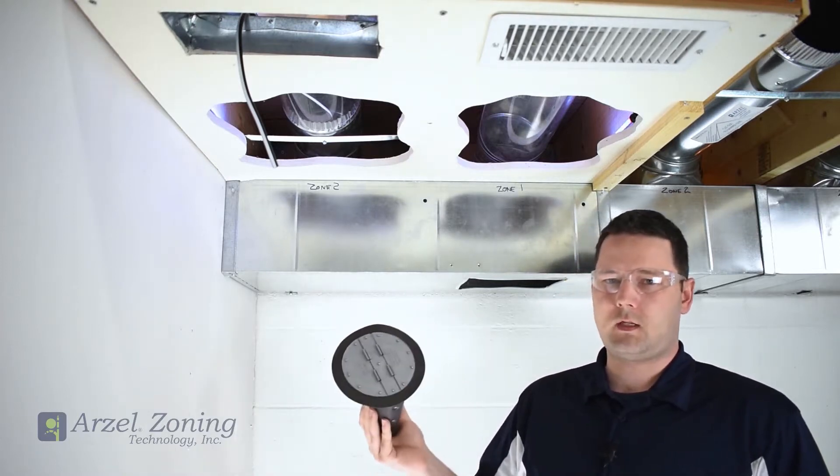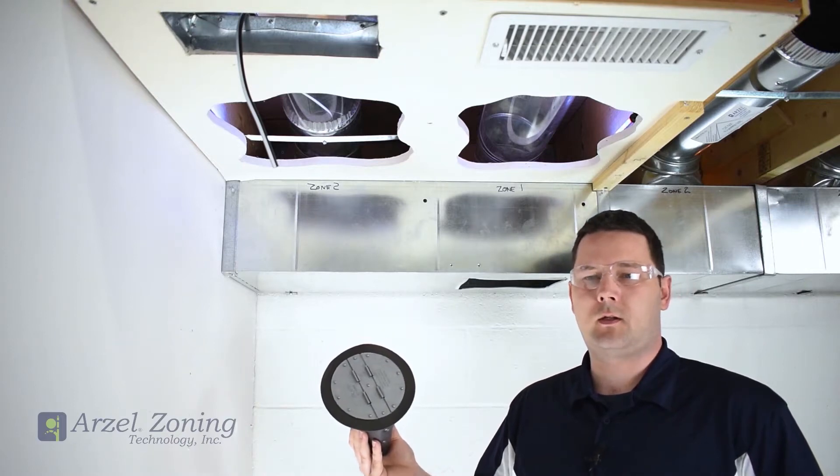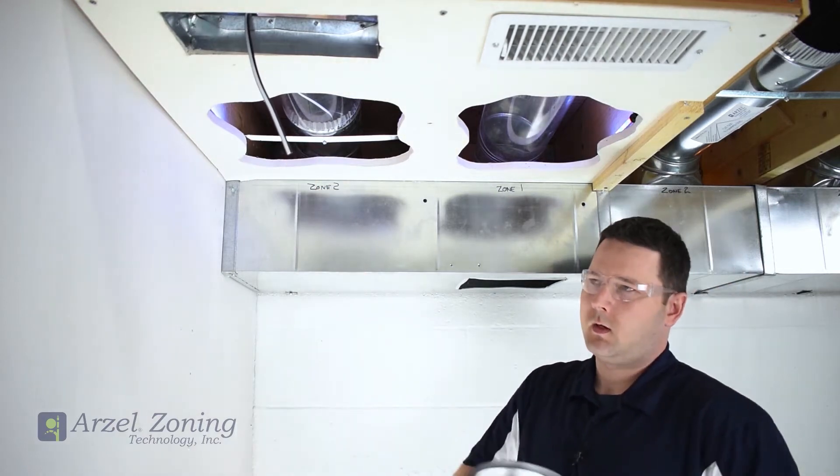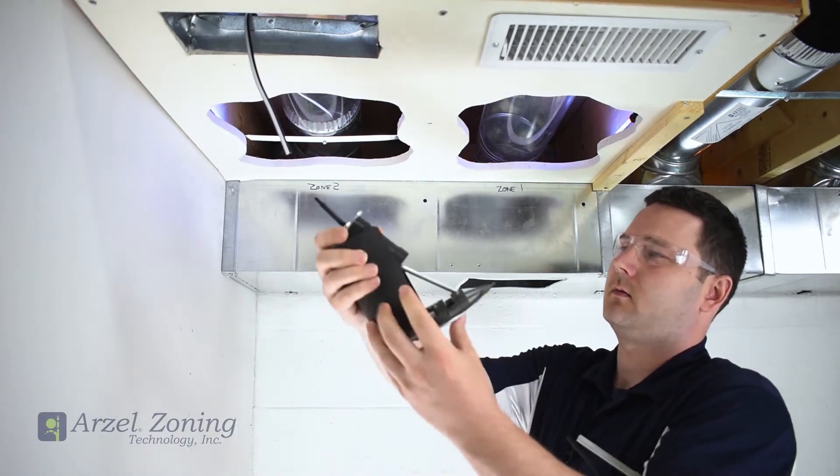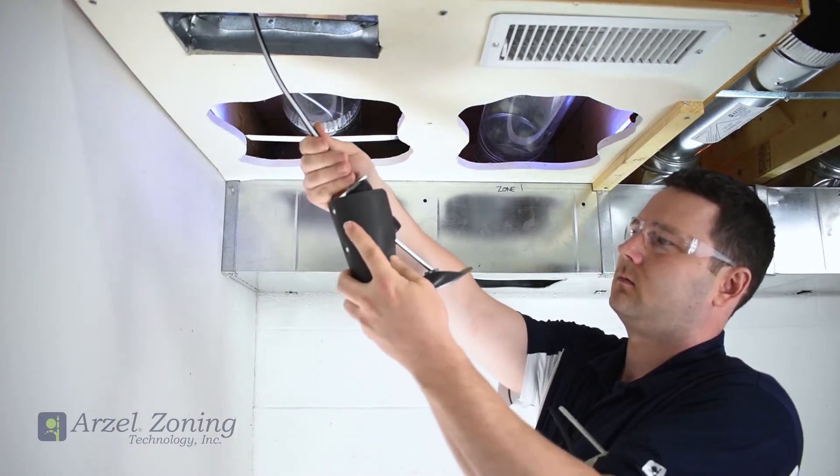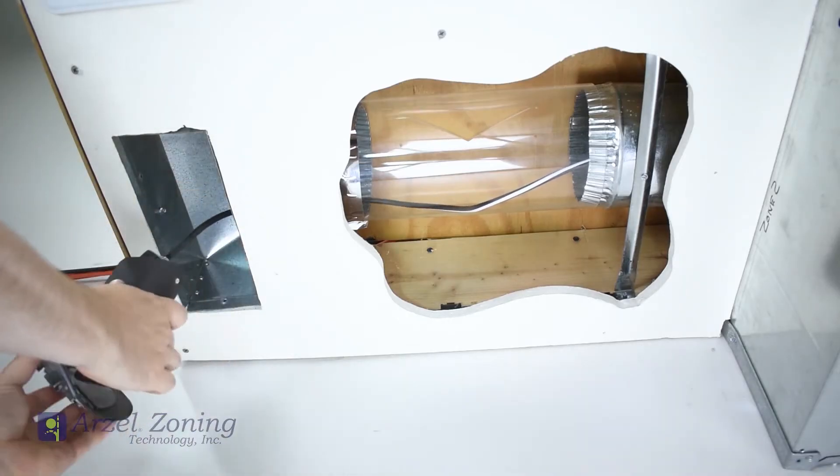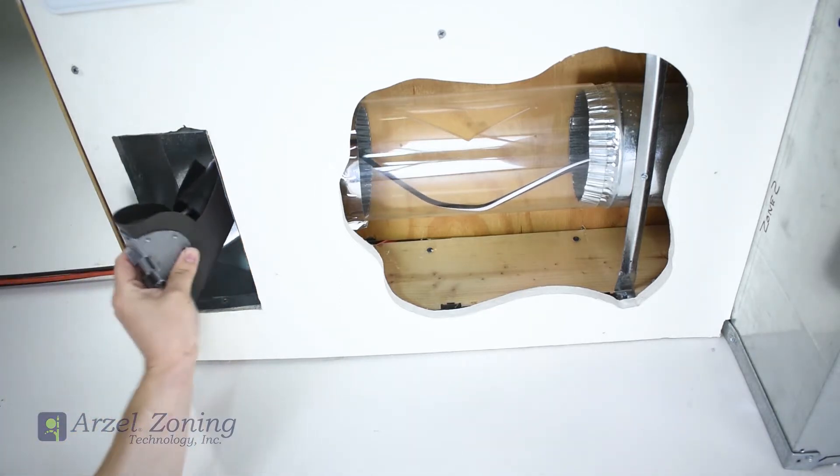Or we have our easy fit damper that you would install through the register boot. So you would route your tubing through the duct system, connect it up to our damper, fold it and insert it.